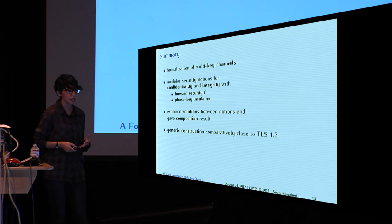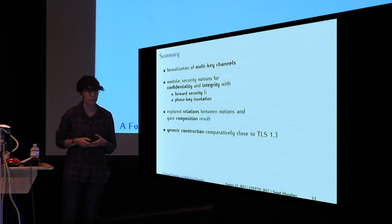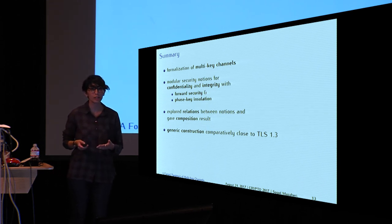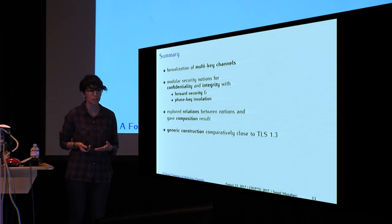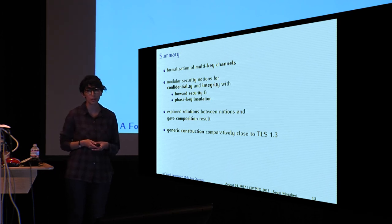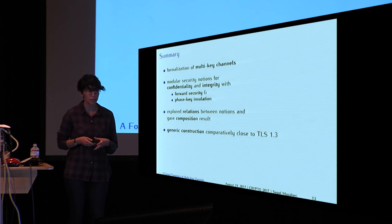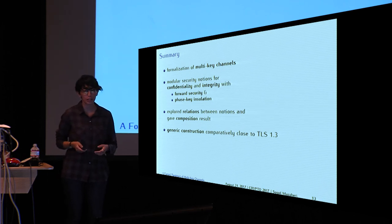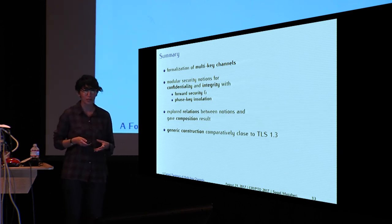To summarize, we formalized multi-key channels and gave adequate security notions for confidentiality and integrity, with the ability to additionally have forward security and phase key insulation. We explored the relationships between these notions, showed that forward security and phase key insulation are orthogonal, extended the known composition result to the multi-key and multi-error setting, and defined a generic construction that is comparatively close to TLS 1.3. This concludes the talk.